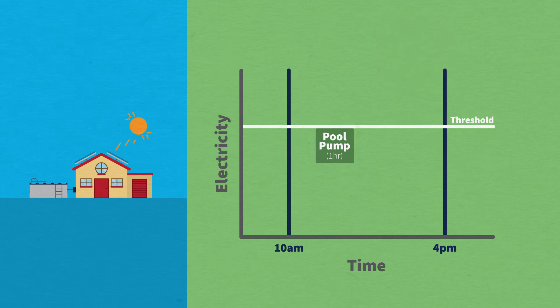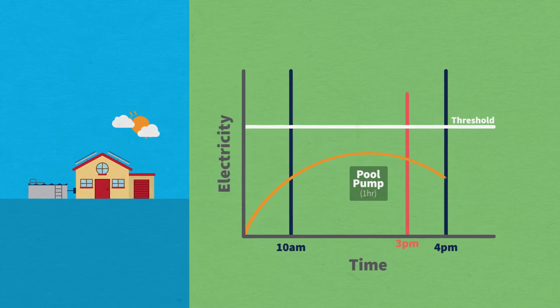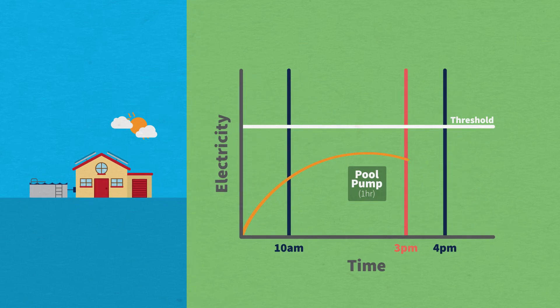But what if your solar generation doesn't hit the threshold? CarbonTrack will still run your circuit. Say it's been a cloudy day, it's 3pm, and solar generation still hasn't reached the threshold. CarbonTrack will turn on the circuit and run your pool pump for the needed hour, and be done by 4pm.